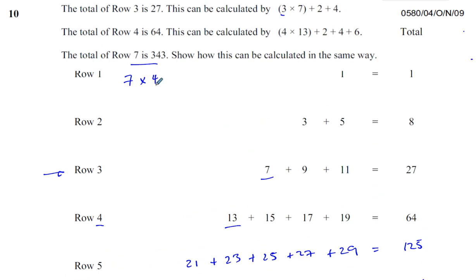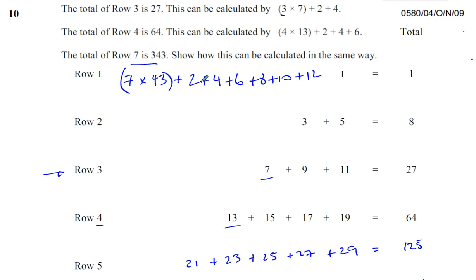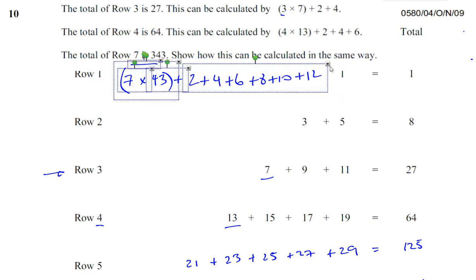For row 3 you add the first two consecutive even numbers (2 plus 4). For row 4, it's the sum of the first three consecutive even numbers. So for row 7, it's going to be plus 2, plus 4, plus 6, plus 8, plus 10, plus 12 — the first six consecutive even numbers. So the expression is 7 times 43 plus 2 plus 4 plus 6 plus 8 plus 10 plus 12.